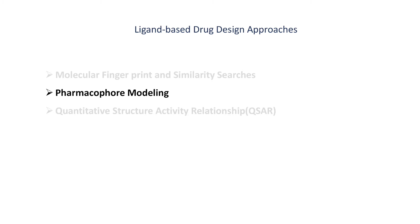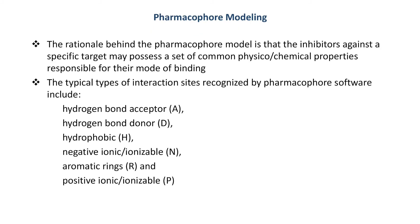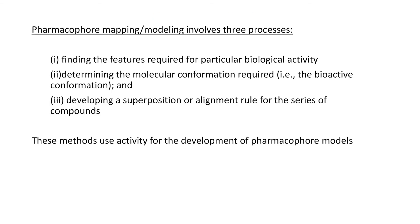The second ligand-based drug discovery approach is pharmacophore modeling. Pharmacophore modeling is based on the principle that if a group of ligands are known to inhibit a particular biological target, all these compounds should possess some common physicochemical properties responsible for the observed biological activity. The typical types of interactions recognized by pharmacophore modeling include hydrogen bond acceptor, hydrogen bond donor, ring aromatic feature, hydrophobic interaction, and positive and negative ionizable properties. Pharmacophore mapping or modeling involves three processes: finding the features required for particular biological activity, determining the molecular conformation required, and developing a superposition or alignment rule for the series of compounds.